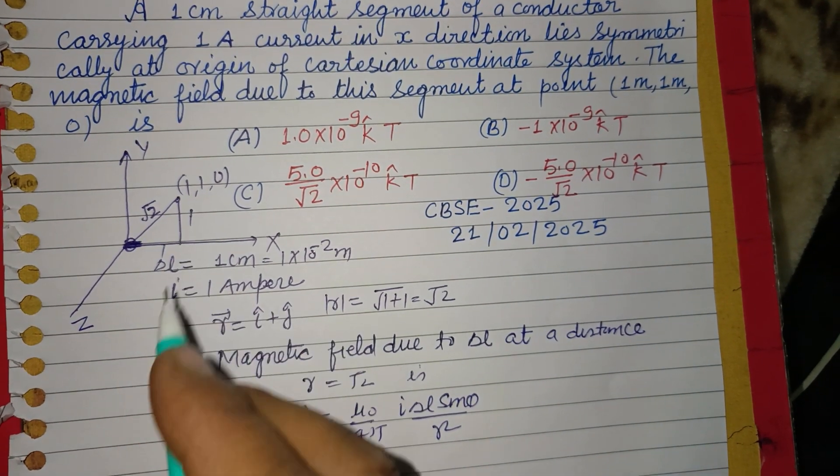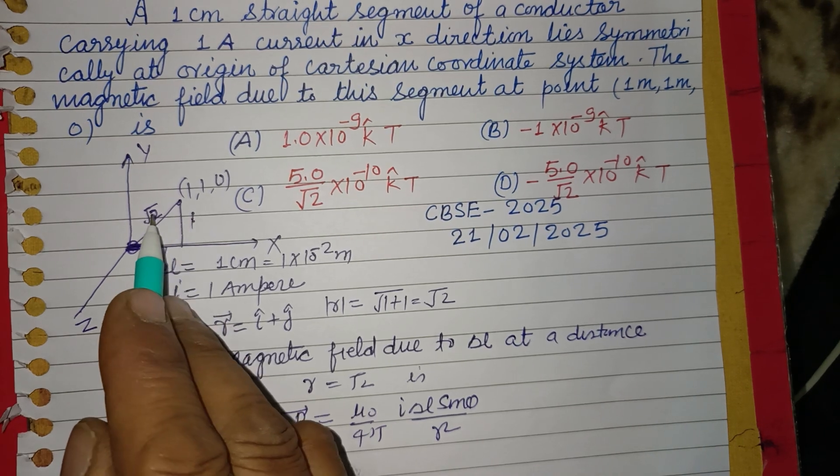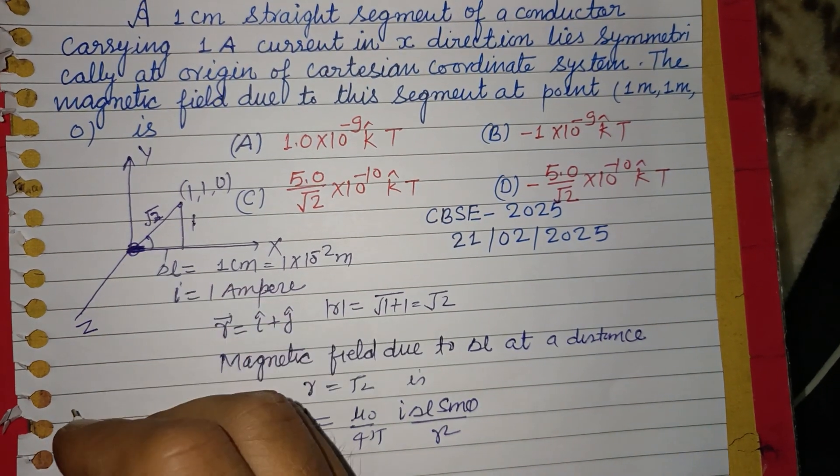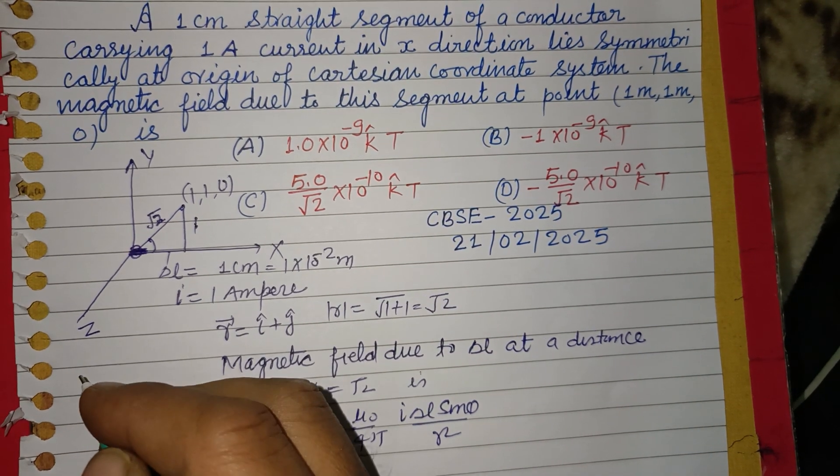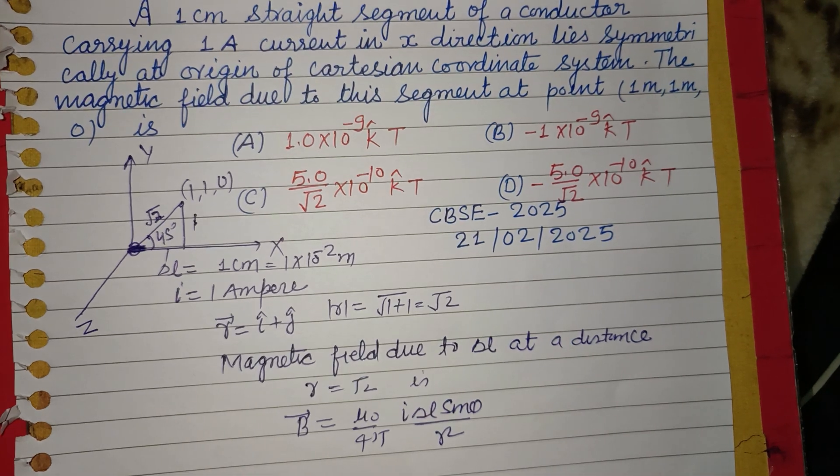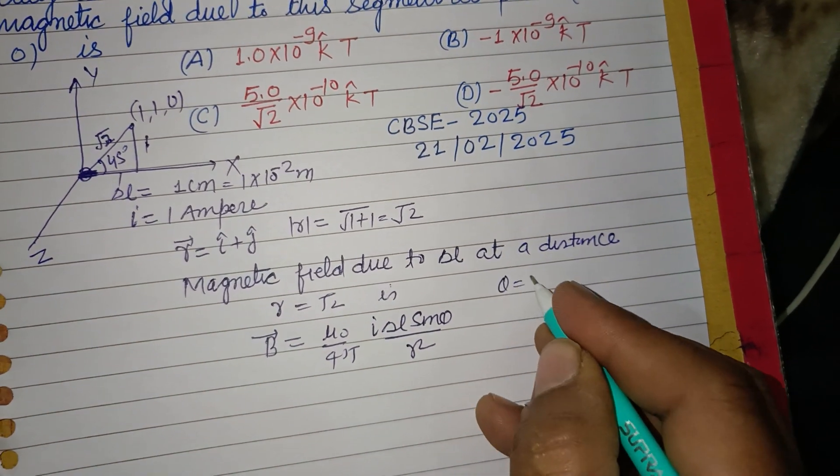Here sinθ means perpendicular over hypotenuse, which is 1/√2, so sinθ = sin45°. Therefore θ = 45°.